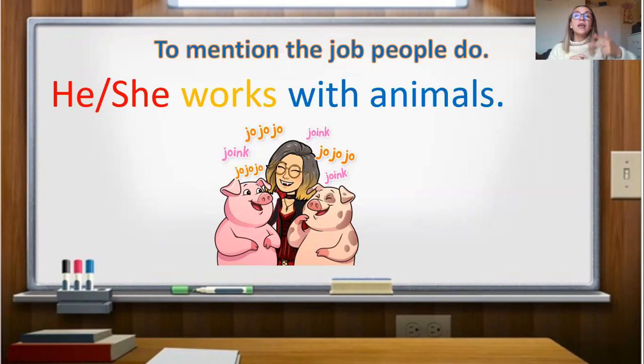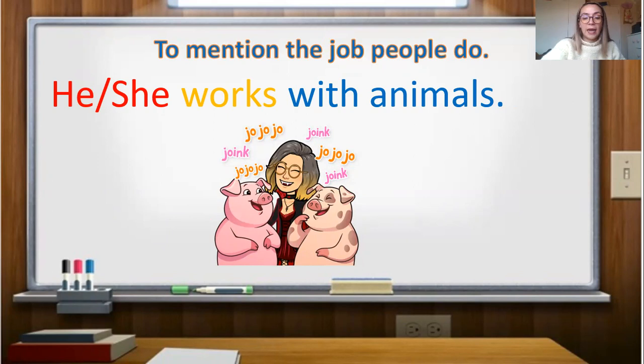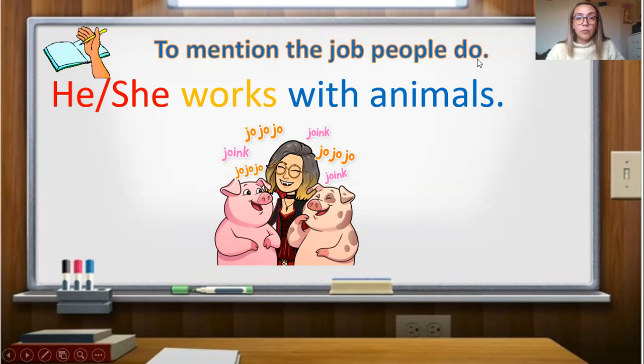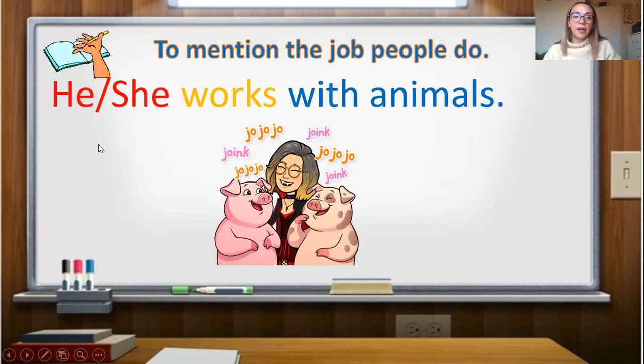This is for when you are mentioning something without being asked. For example, if I say 'What does your mother do?' — '¿Qué es lo que hace tu mamá?' — you answer: 'She works at home,' 'She works with students,' 'She works with animals,' etc. Now open your English copybook again and write down the subtitle 'To mention the job people do' and the example with different colors — I use red, yellow, and blue, but you can use any color. Pause the video and press play when you're ready.